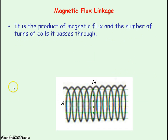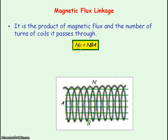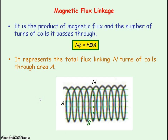Magnetic flux linkage is defined as the product of the magnetic flux and the number of turns of coil the flux is passing through. It's given by the equation N phi, where N is the number of turns of coil of wire and phi is the flux through one coil of wire. Essentially, it represents the total flux linking N turns of coil. So phi is the flux linking one turn of coil, and multiplying by N gives the total flux linking all the turns.